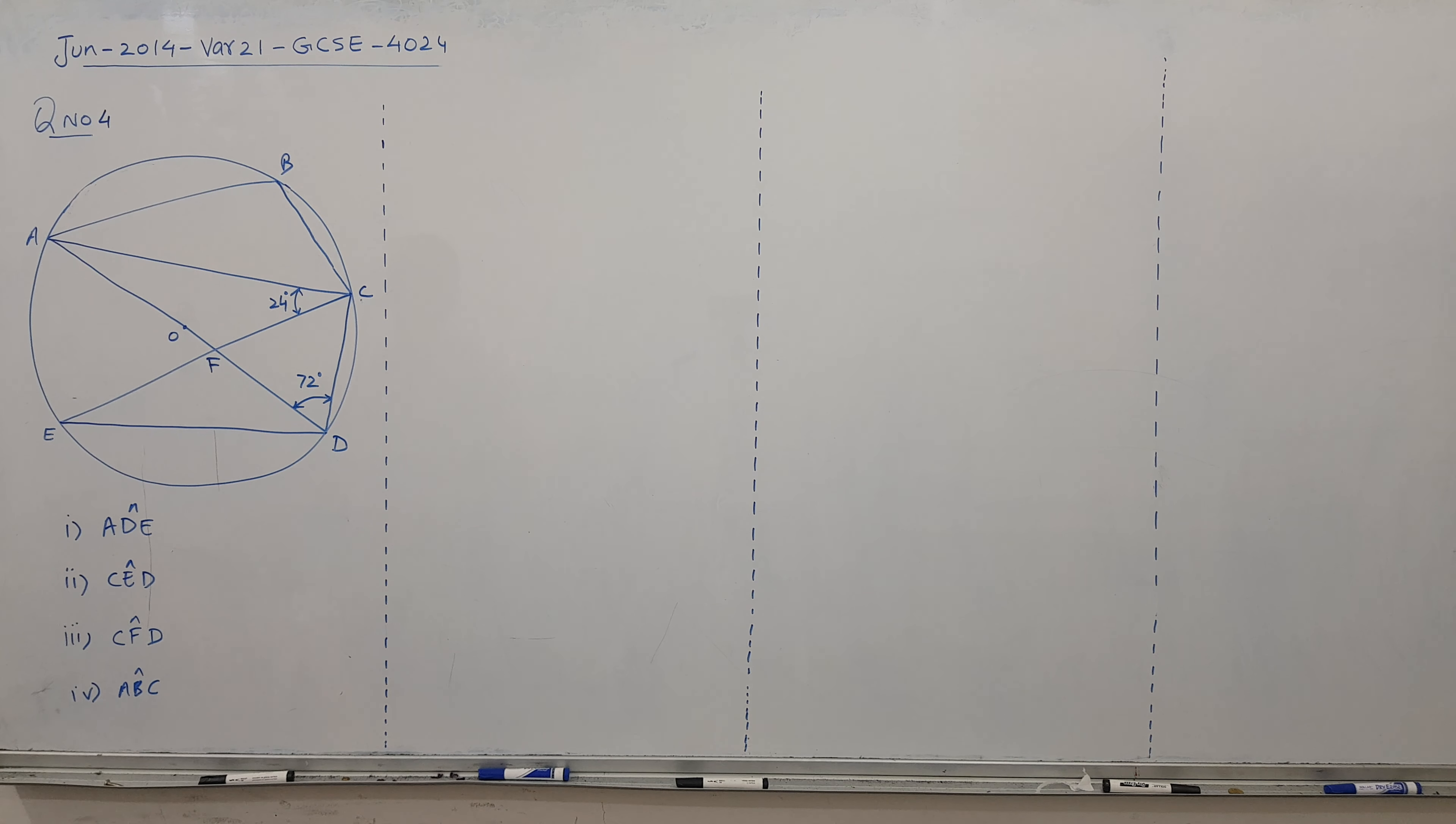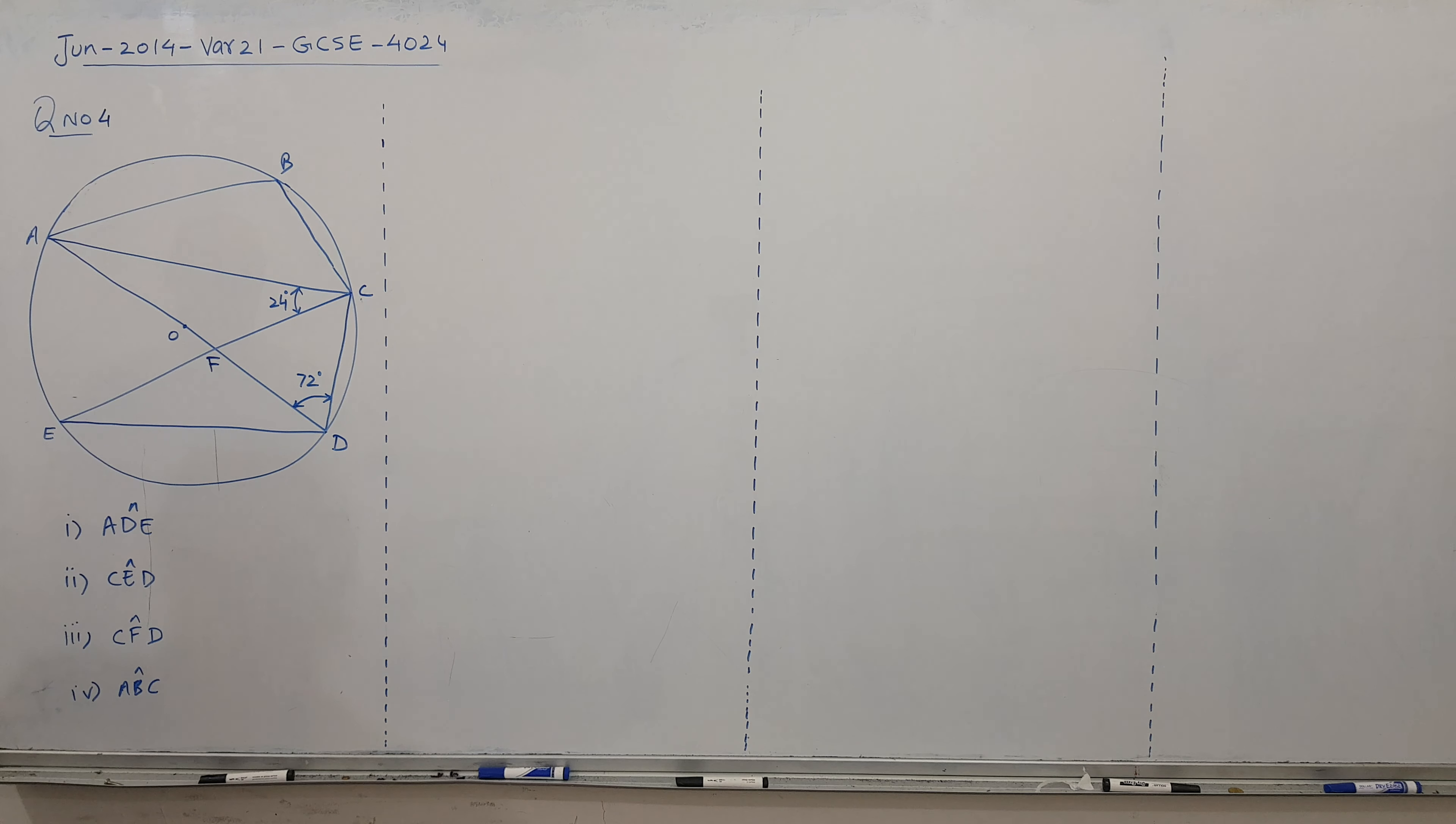This is question number 4, June 2014-21 variant. We have a circle here and a diameter is given. Before I start, you can see point B is joined with A and C, and C with D. They are 90 degrees.